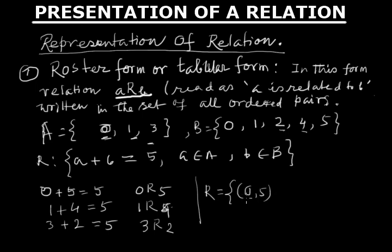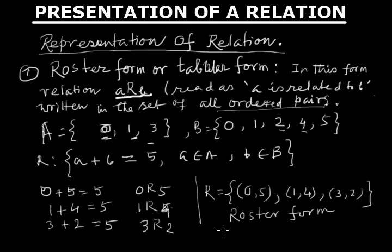We have to write R in the set of all ordered pairs. So first ordered pair is (0,5), then (1,4), and then (3,2). This is called roster form or tabular form.